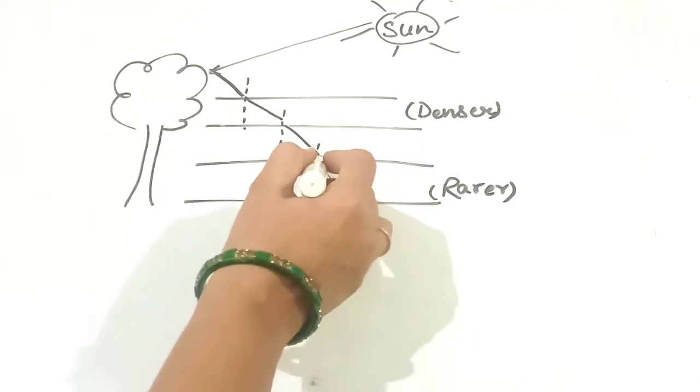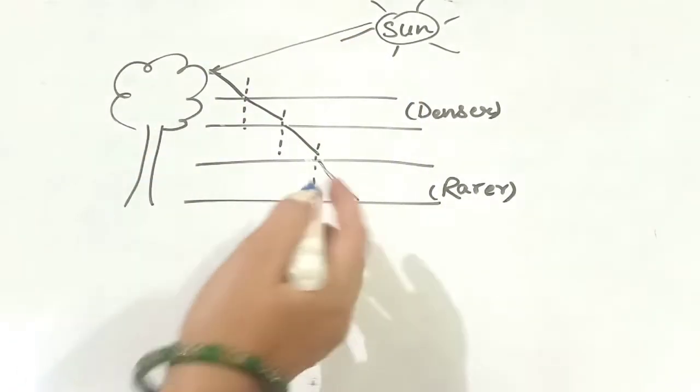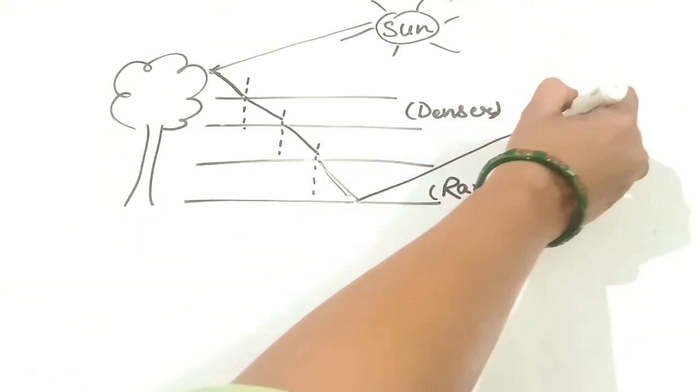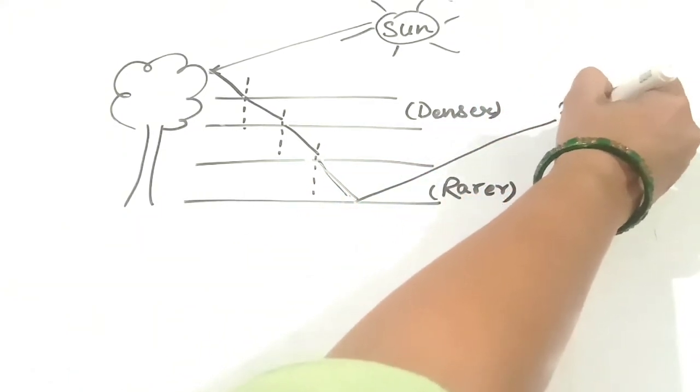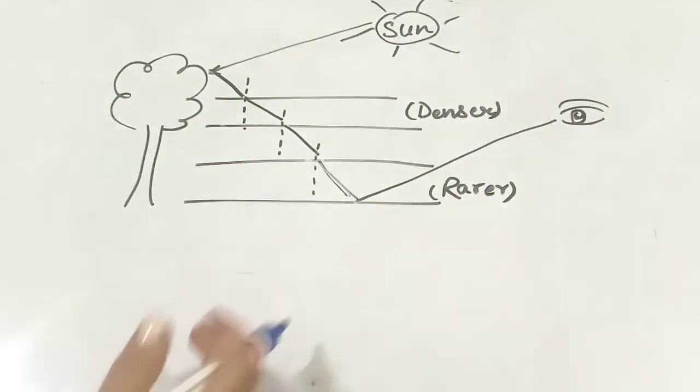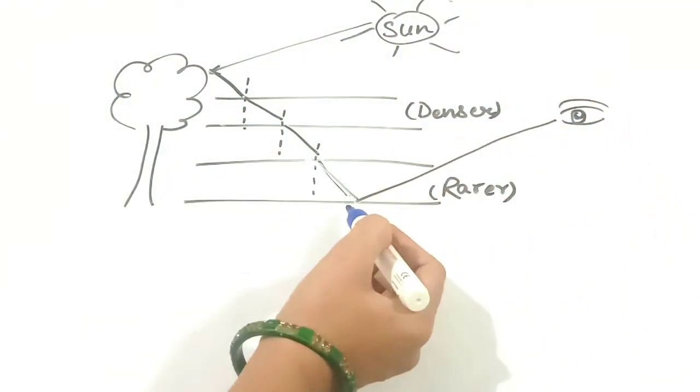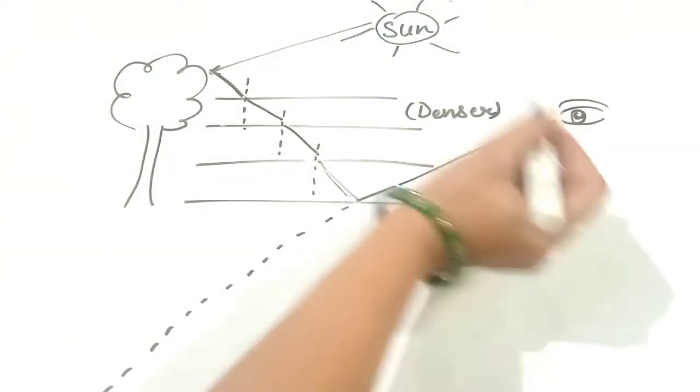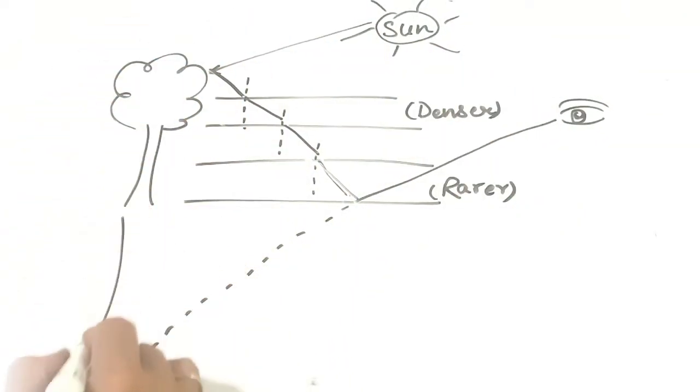At that time, instead of refraction, total internal reflection occurs and the light is reflected to the observer's eye. The human eye has a tendency to see light as always traveling in a straight line. So the observer will see the reflection of this tree, an inverted image of the tree.